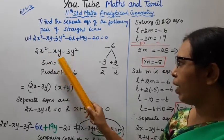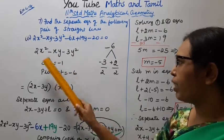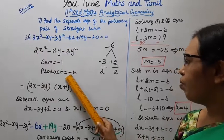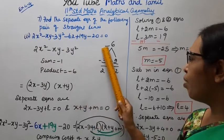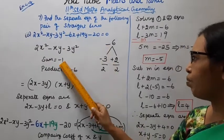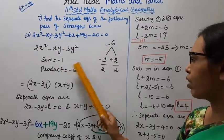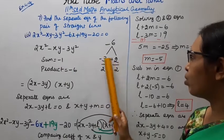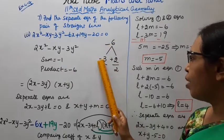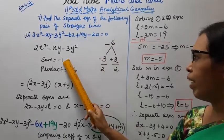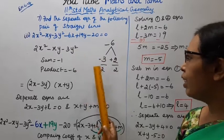This is the sum of minus 1, product 2 into minus 3 equals minus 6. Minus 6 is the product; the sum is minus 1. Minus 3 into plus 2 equals minus 6. Minus 3 plus 2 equals minus 1, which is the same sum.